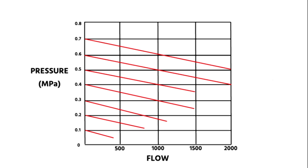The flow curve shows the flow rate for a set input pressure with multiple output pressures. For each output pressure, it can be seen how the pressure changes with increasing flow rate. It is recommended to use the device in the flat range of the curve, and not at the beginning or end of the curve.